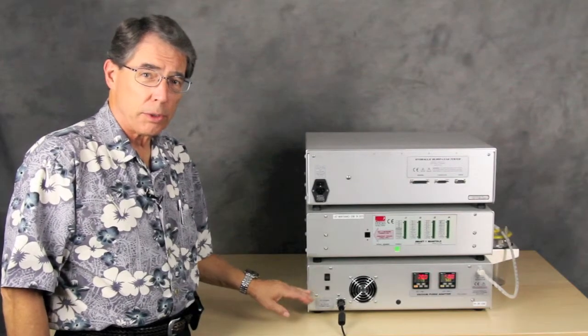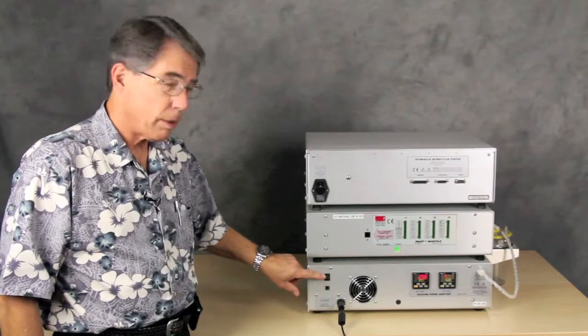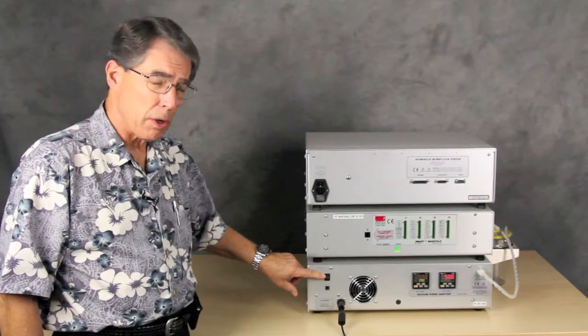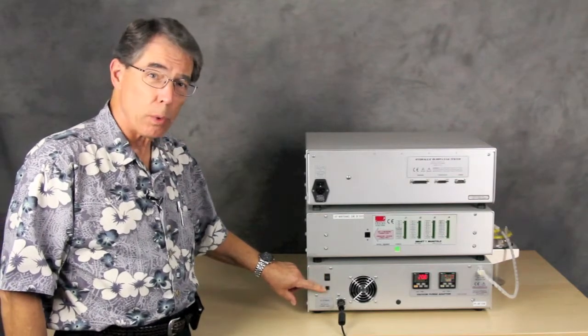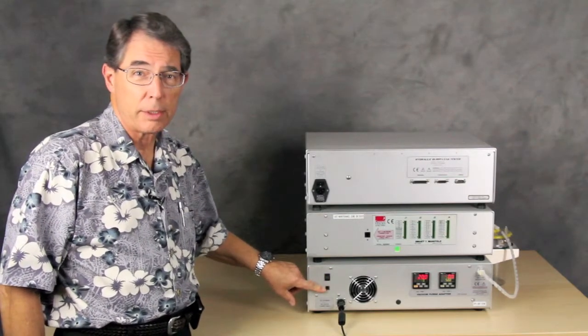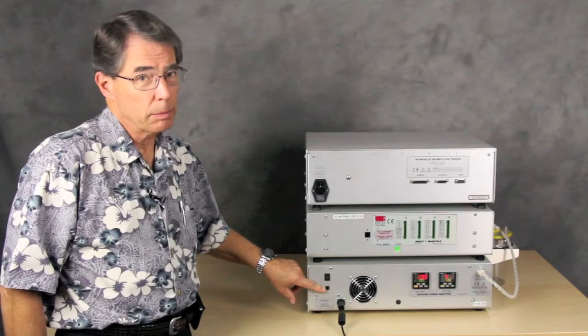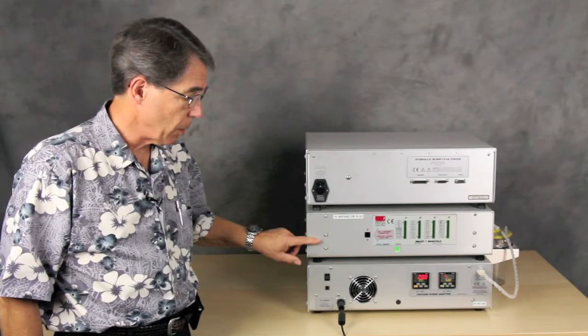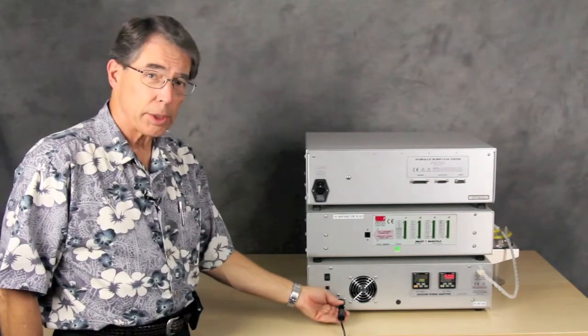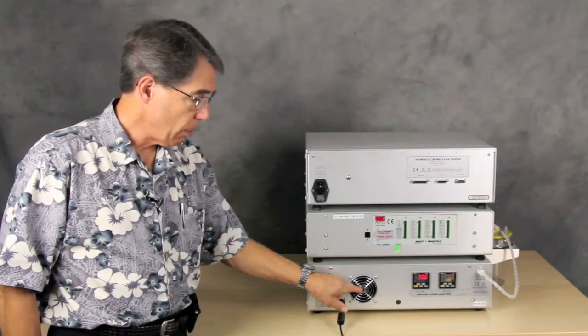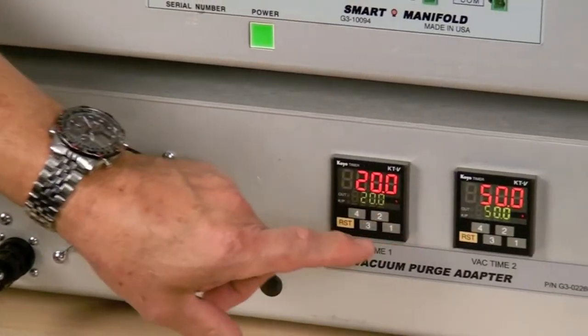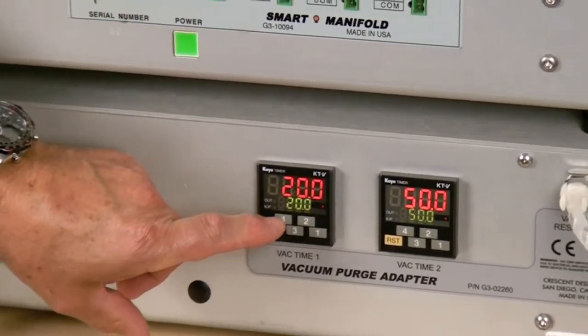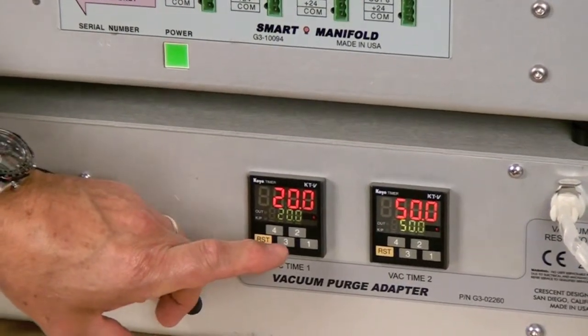Now we've turned the unit around so you can see the rear. Here we have the power switch for turning the unit on and off. We have a USB port that allows you to connect it to LabGenie, which provides even additional functionality along with the HBLT and the Smart Manifold. The power connection, cooling fan, and here are the two timers that are started from the front of the unit.